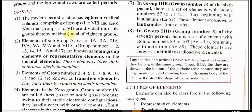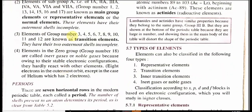The modern periodic table has 18 vertical columns comprising groups 1, 2, 3 to 8, and 0. Groups 1 to 7 are divided into subgroups, giving a total of 18 groups. Elements of subgroups 1A, 2A, 3A, 4A, 5A, 6A, and 7A are known as main group or representative elements or normal elements. Elements of groups 3 through 12 are called transition elements because they have two outermost shells incomplete. Elements of group 0 — that is group 18 — are called inert gas or noble gas, because owing to their stable electronic configuration they hardly react with any other element.